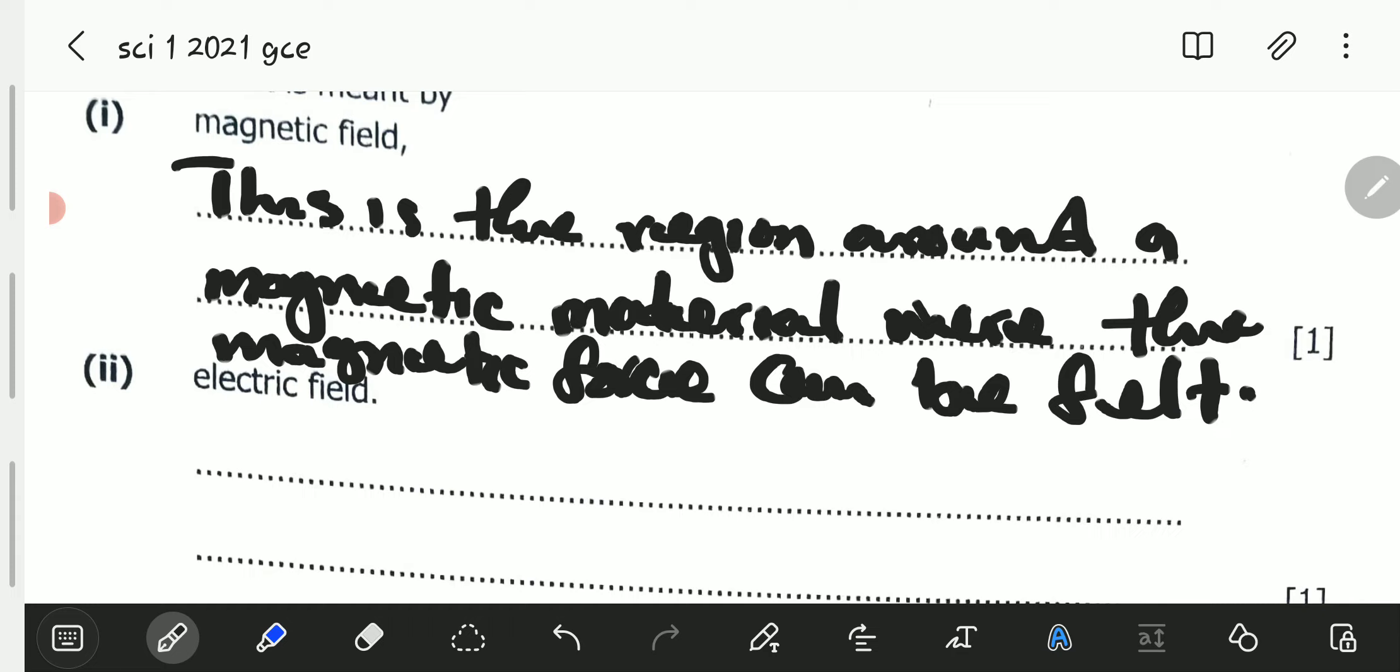The magnetic field can be felt or can be experienced. It should also be noted that the magnetic field also exists in the region around an electric charge. We should also bear in mind that the magnetic field can also be around an electric field. So around an electric field, you have two fields: you have an electric field and you also have a magnetic field.